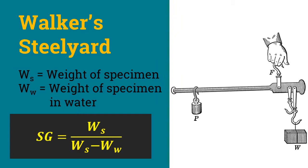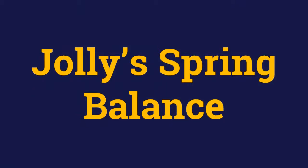Whenever something is immersed in water, it experiences a loss in weight equal to the weight of water it displaces, due to the buoyant force. In the example, the weight of water of the same volume as the specimen is 4 kg, which equals WS minus WW. Finally, we divide the weight of the specimen by the weight of water — that is 10 divided by 4 — to obtain a specific gravity of 2.5.